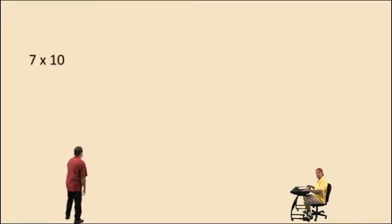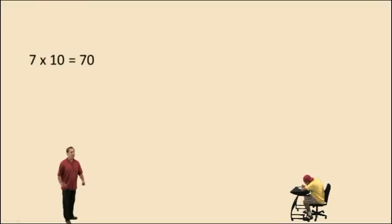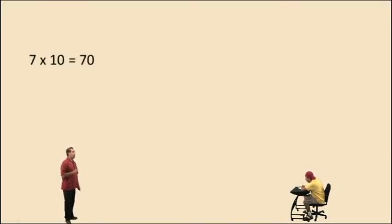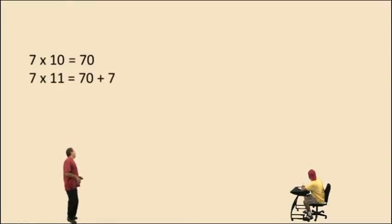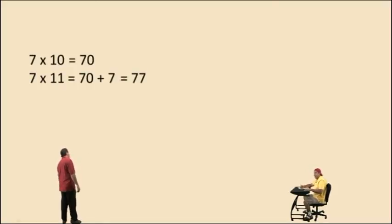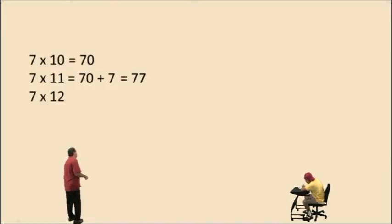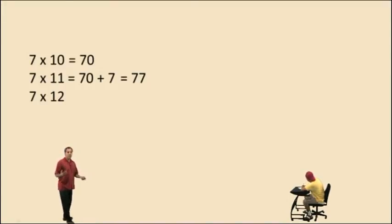How about seven times ten? Seven times ten, just add the zero to the seven, and it's seventy. Remember, it means you have ten of these sevens being added up. So if we do seven times eleven, all we have to do is add another seven. What's seventy plus seven, Charlie? Seventy-seven. That's right — when we do seven times eleven, all we have to do is add another seven to seventy, and we do get seventy-seven.